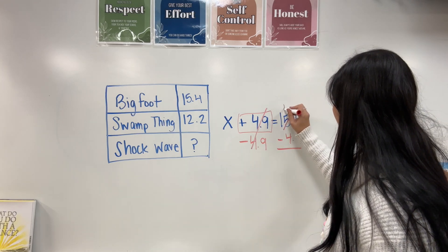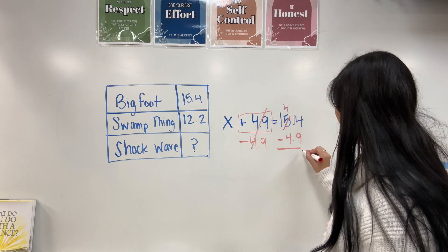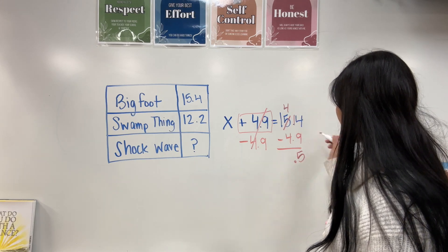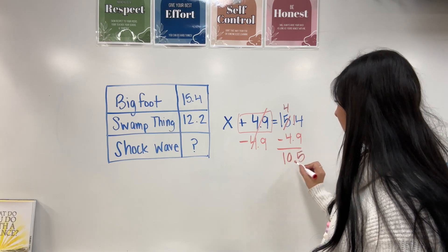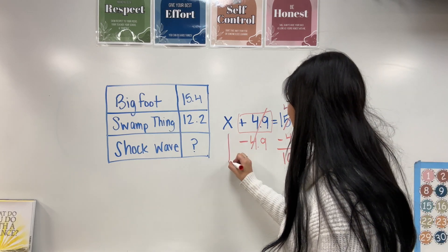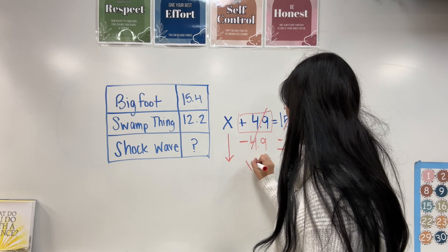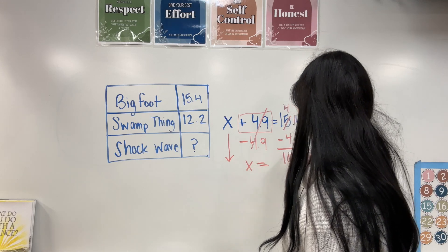So I need to borrow. That gives us five. Bring down the decimal. Zero. Bring down the one. So we have 10.5. I got the x by itself. So I have x equals 10.5.